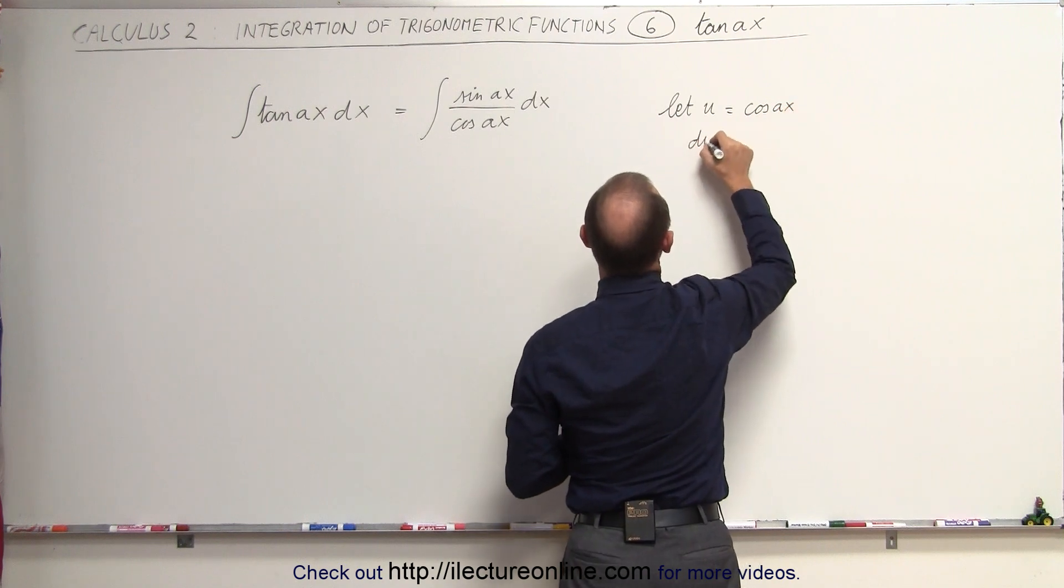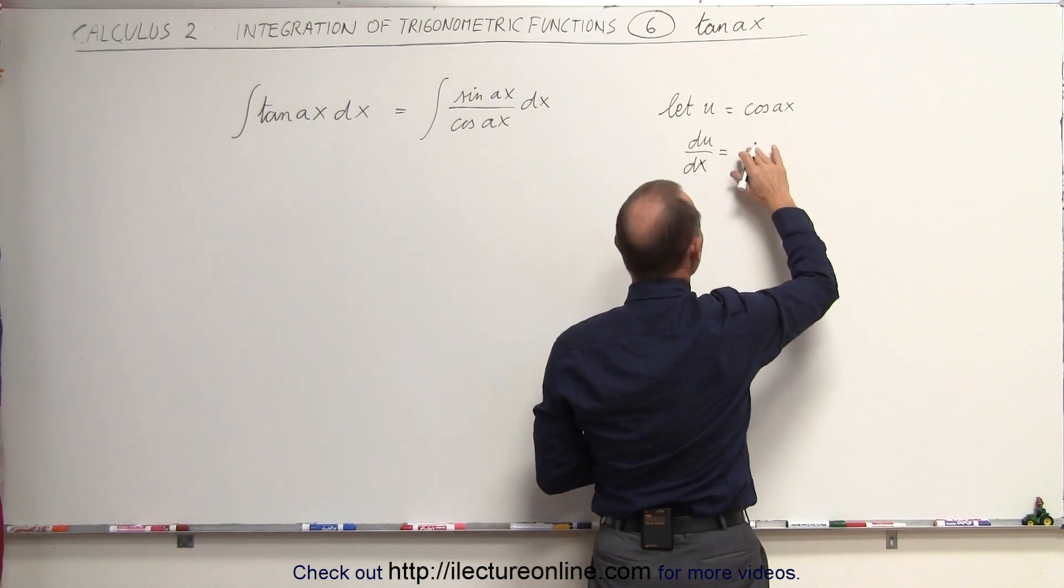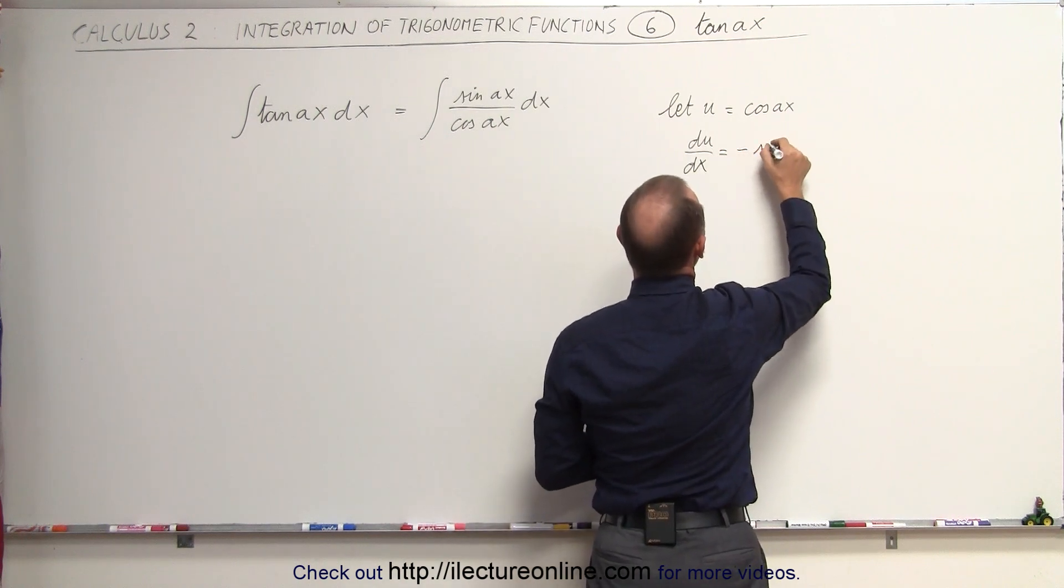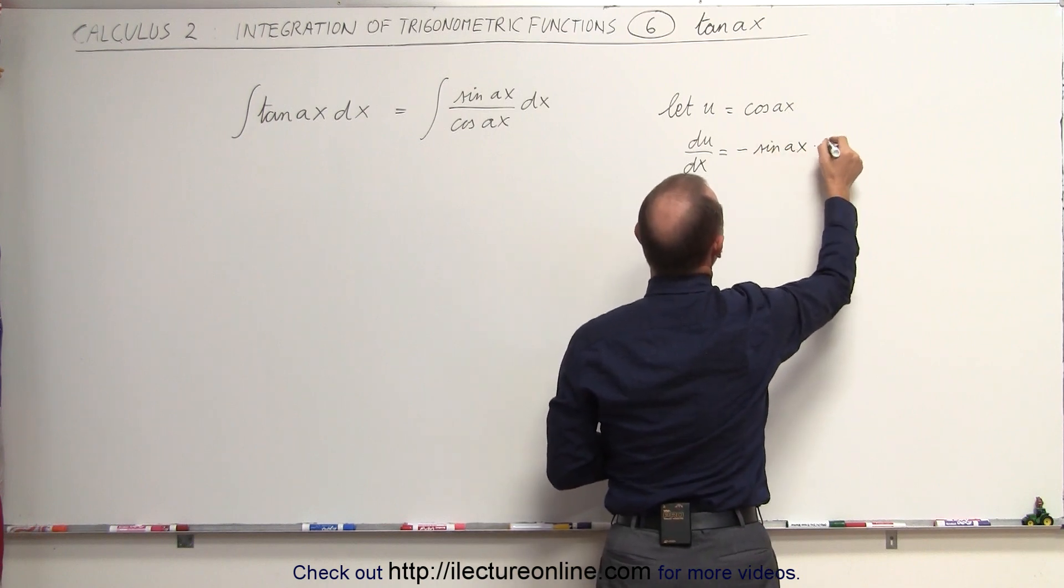And then we can say that du/dx, the derivative of that, is equal to... the derivative of the cosine is the negative sine, so it's the negative sine of Ax times the derivative of the angle times A.